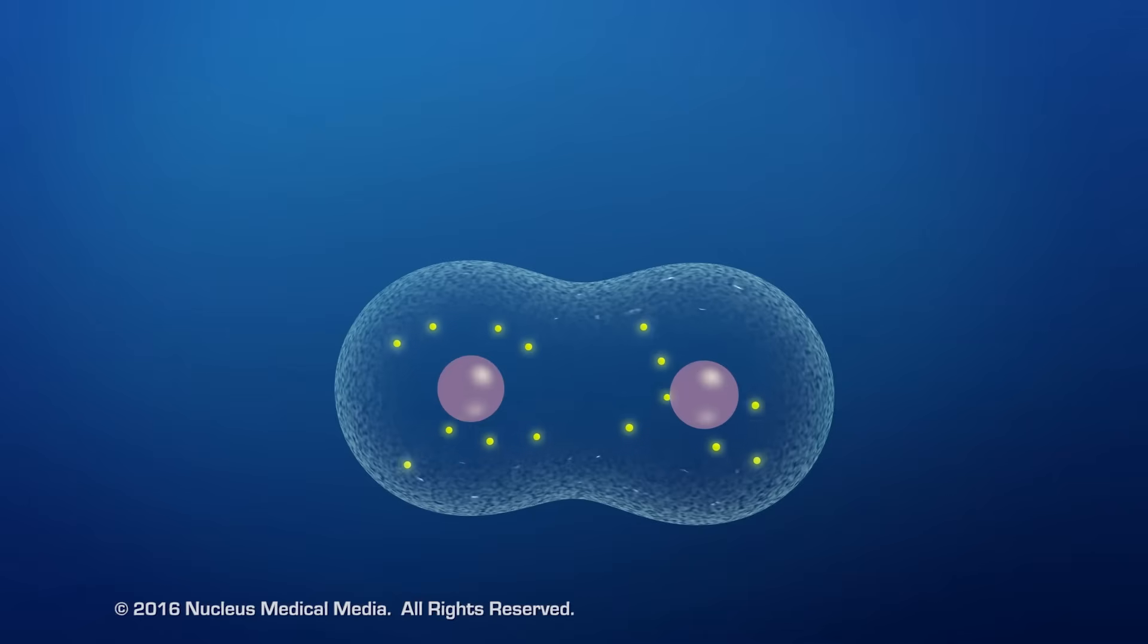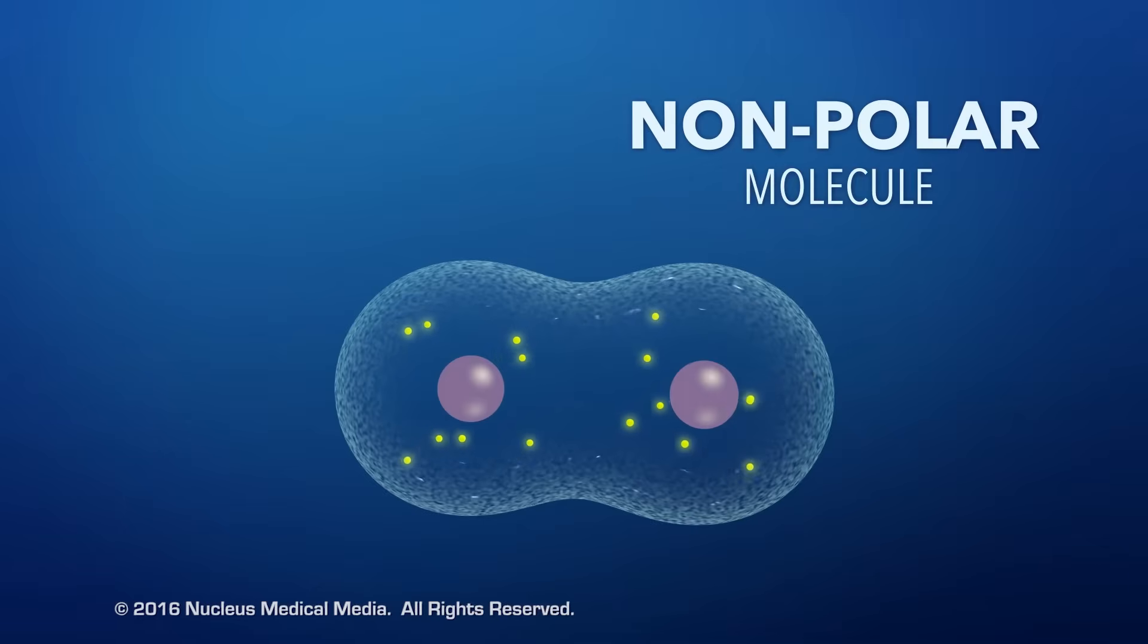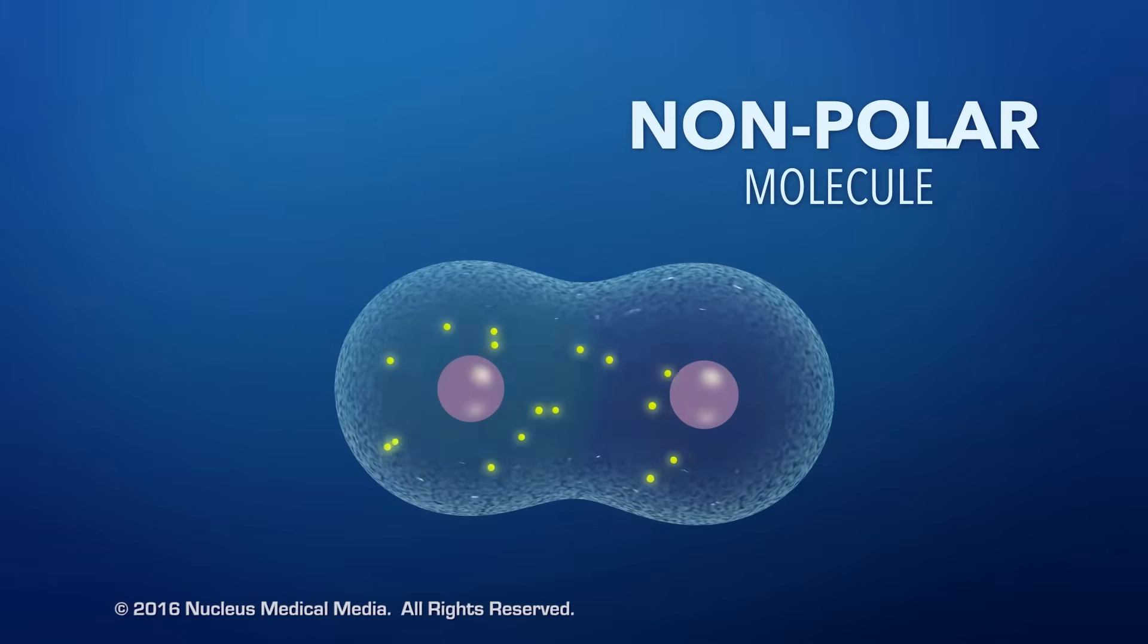If a molecule doesn't have permanent poles of opposite electrical charge, it's called a nonpolar molecule. However, nonpolar molecules can become polar for very brief moments since the locations of electrons around atoms are constantly changing.